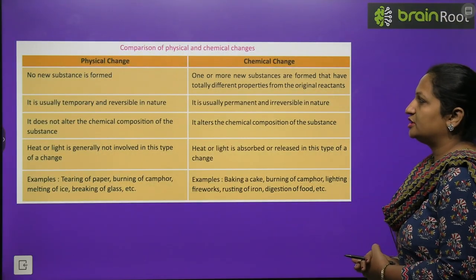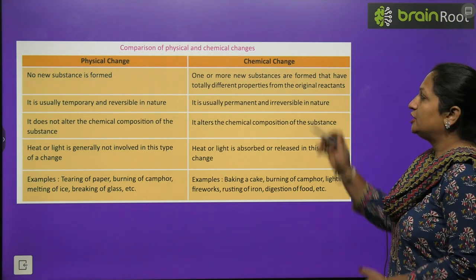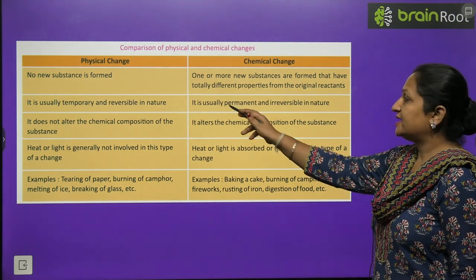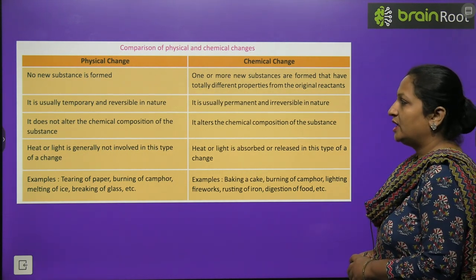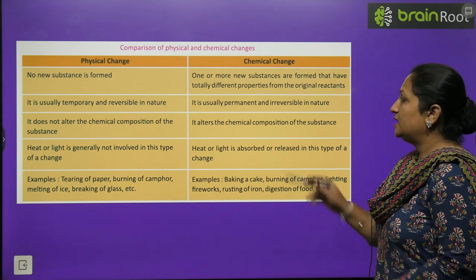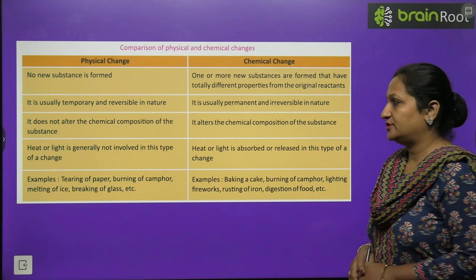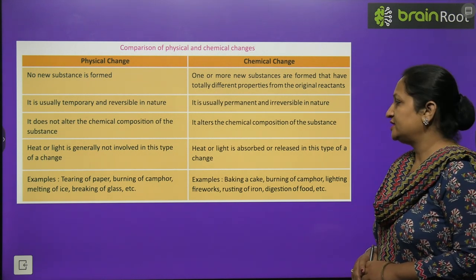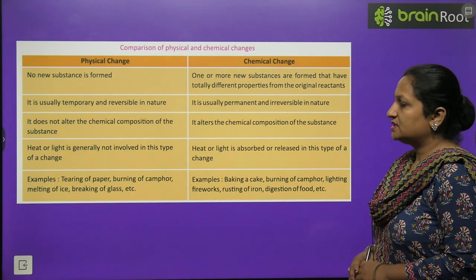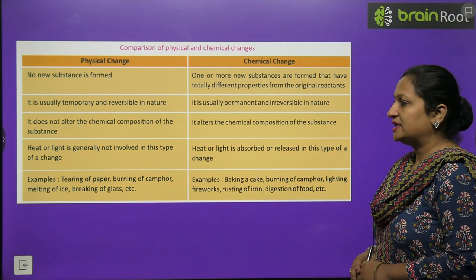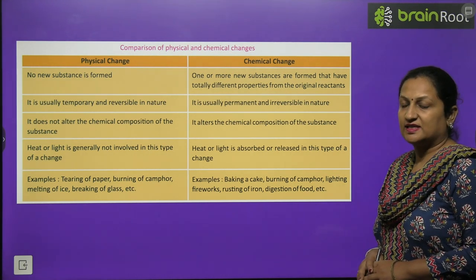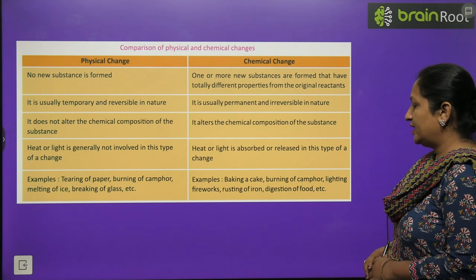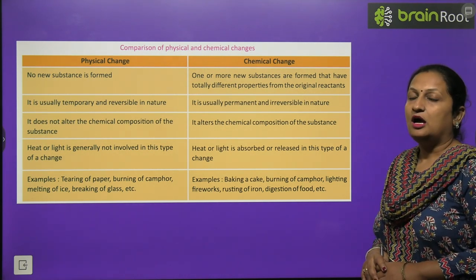Comparison of physical and chemical changes: In physical changes, no new substance is formed; in chemical changes, a new substance is formed. Physical changes are usually temporary and reversible; chemical changes are permanent and irreversible. Physical changes do not alter chemical composition; chemical changes alter the composition. Heat or light is generally not involved in physical changes, but in chemical changes heat and light energies are absorbed or released. Examples of physical changes: tearing of paper, melting of ice, breaking of glass. Examples of chemical changes: baking of cake, burning of camphor, lighting fireworks, rusting of iron, digestion of food.